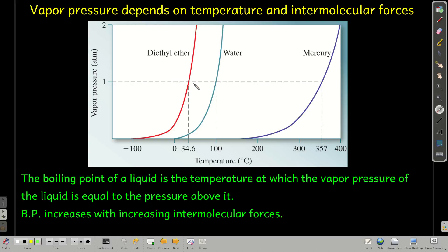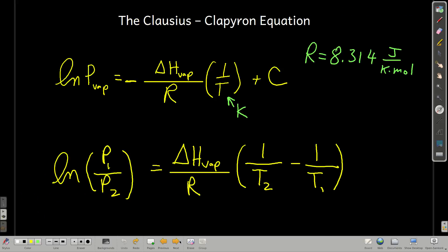We can see that the boiling point of diethyl ether, the temperature at which its vapor pressure is equal to one atmosphere, is 34.6 Celsius. Water is 100. Mercury is 357 Celsius. So what we can get from that is that boiling point increases with increasing strength of intermolecular forces. Stronger intermolecular forces, higher boiling point and vice versa.